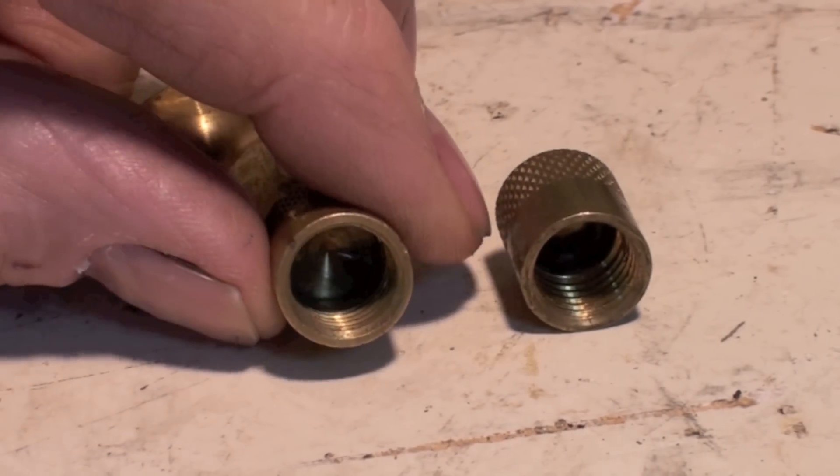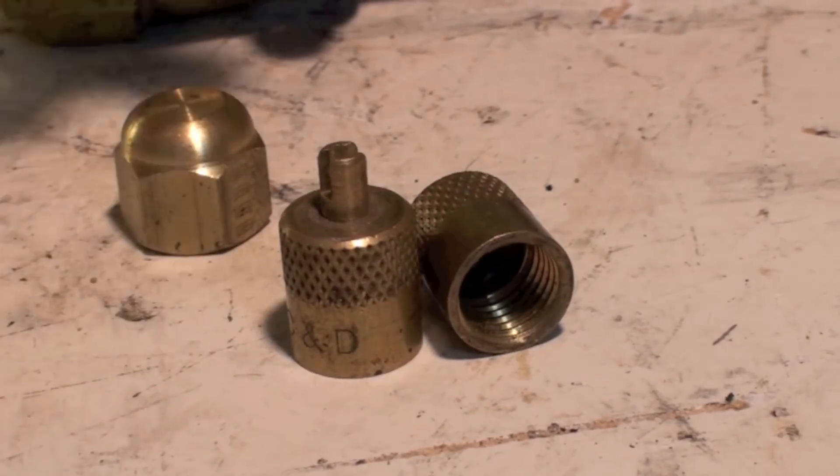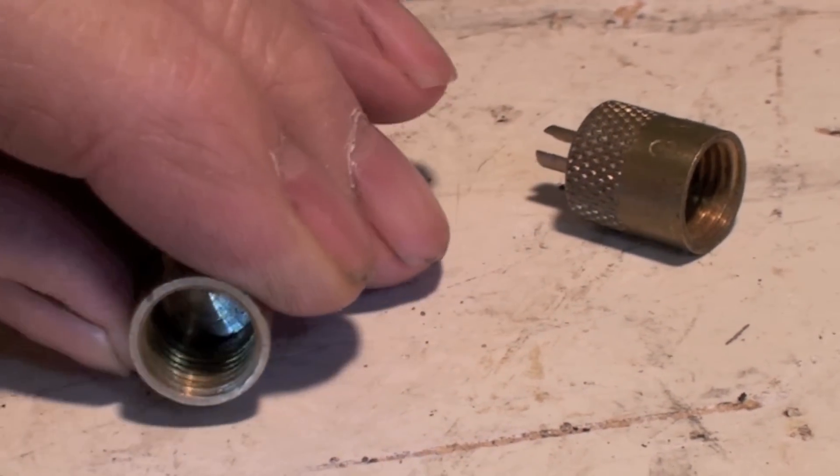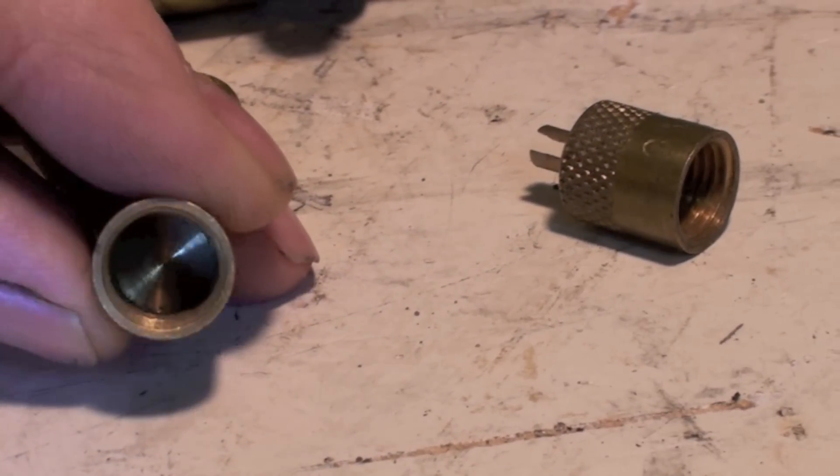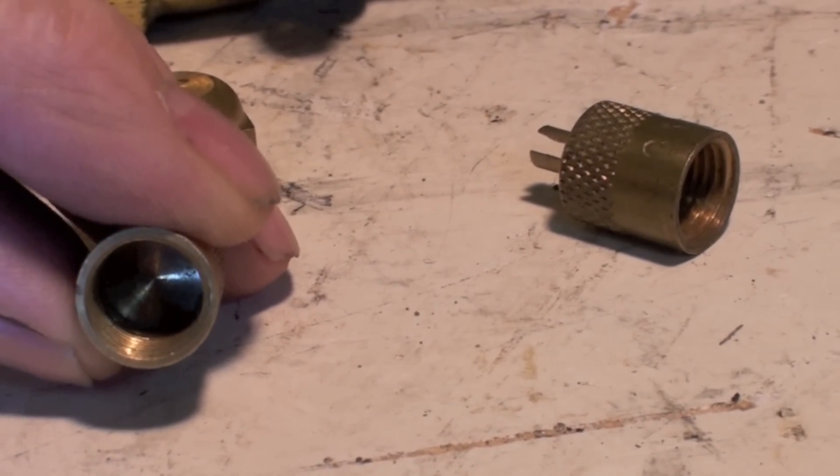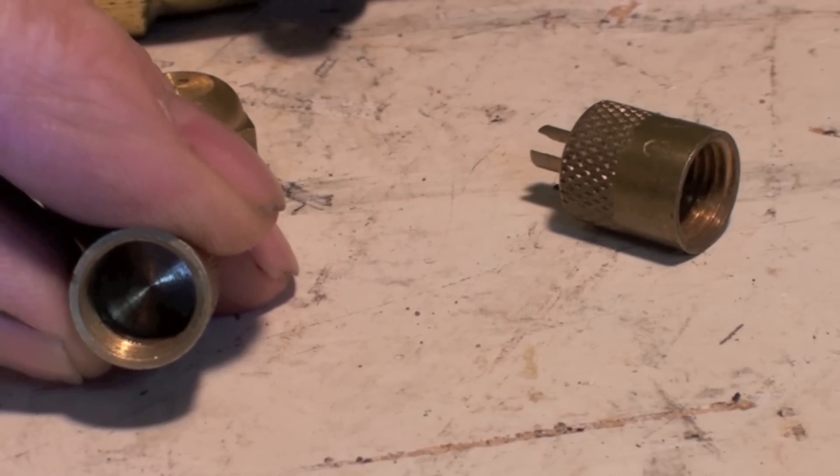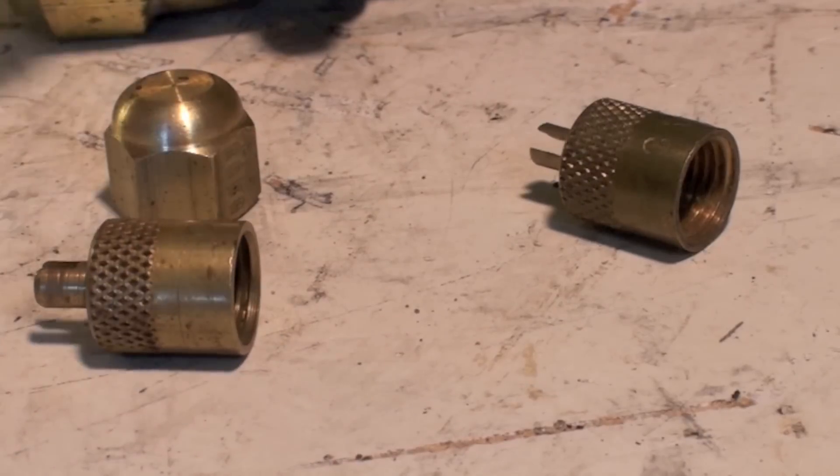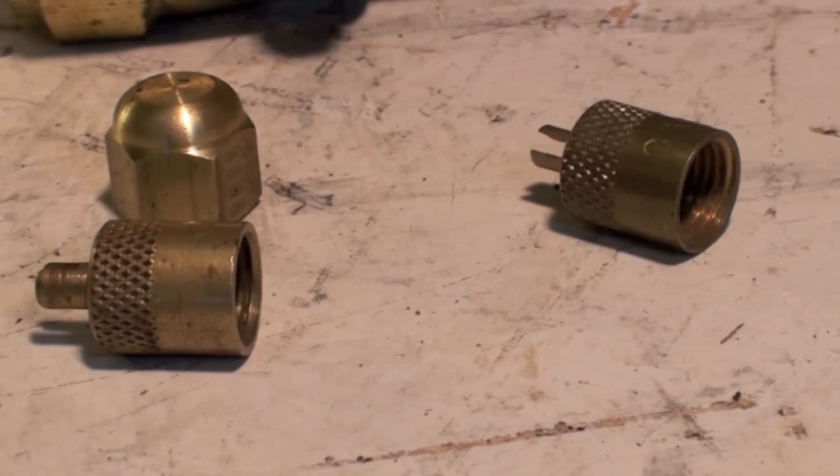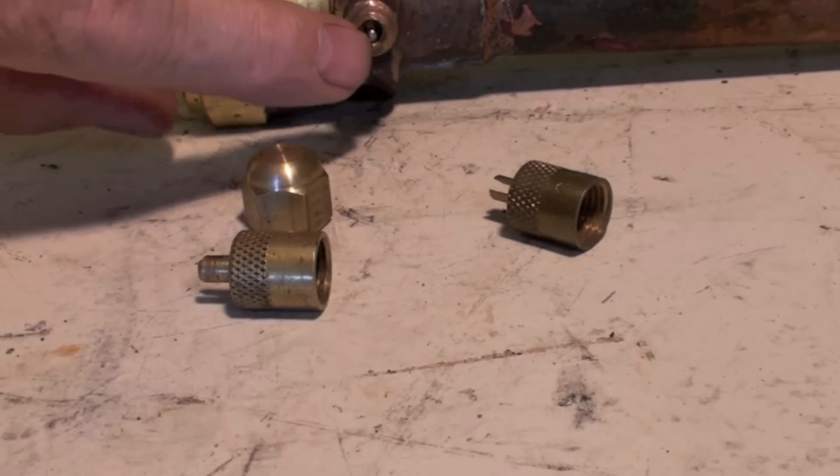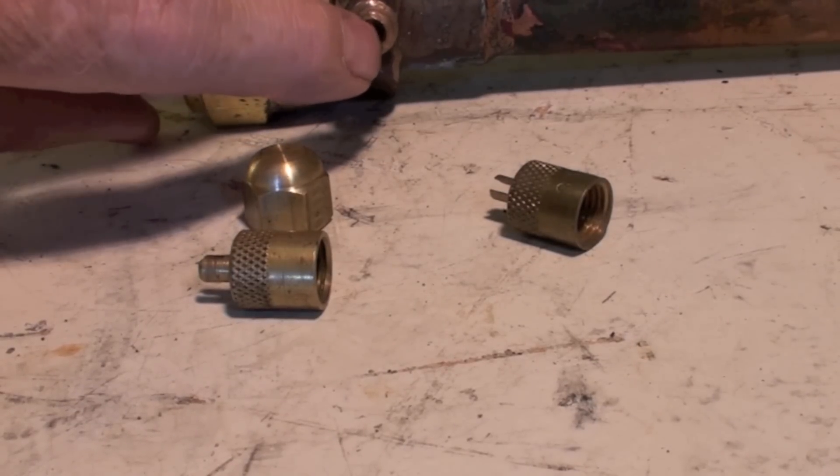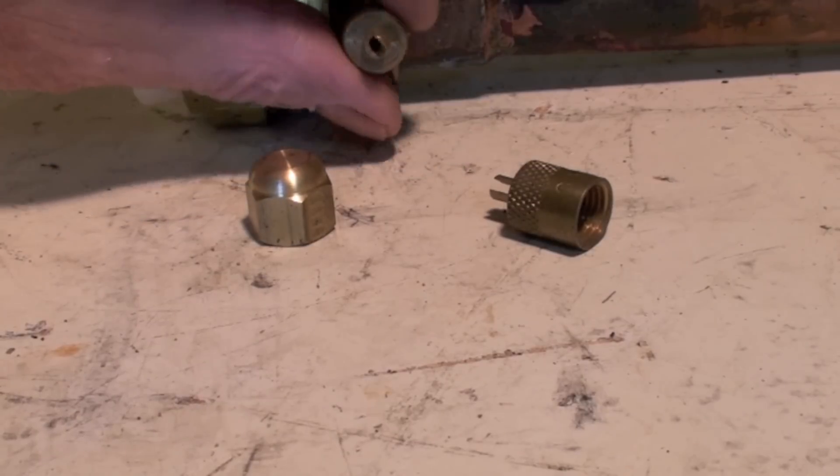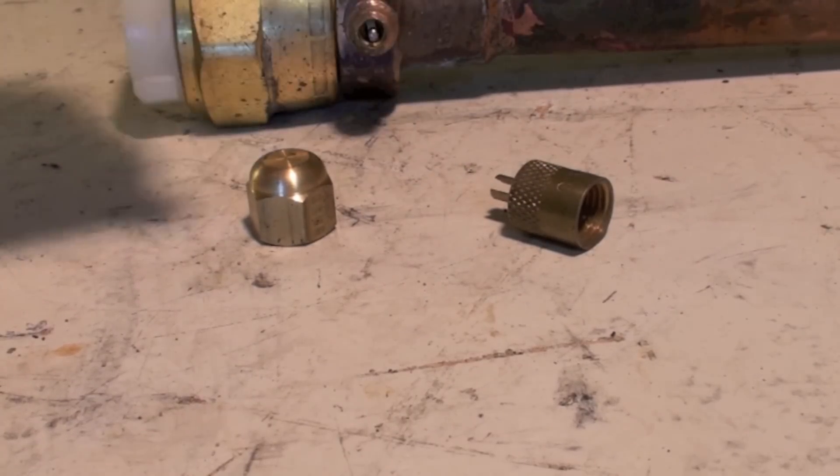If you look in these caps, this one here just got a Schrader removal tool on it. If you look in this cap you can see there's no O-ring in there. The O-ring is falling out of this thing. Do not use this cap. If you tighten this cap down on the Schrader here, this cap oftentimes when it tightens down will tighten down enough to open the Schrader valve and it'll leak just a little bit.